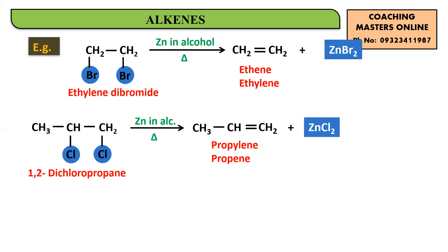So this was all about dehalogenation and dehydration. In dehydration, you are removing water. In dehalogenation, you are removing halogens — but you require a vicinal dihalide, meaning two halogens on two different adjacent carbon atoms. In both cases, a saturated compound with a single bond is converted into an unsaturated alkene. So yes, both of these reactions can be used as preparatory methods for alkenes. In the next module, we will study the actual mechanism of dehydration and how to determine the major and minor products.